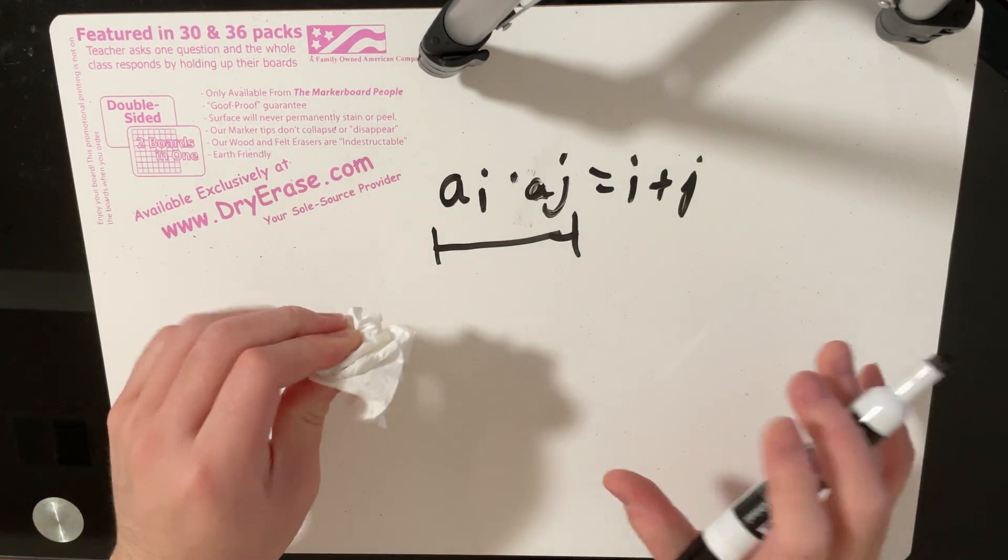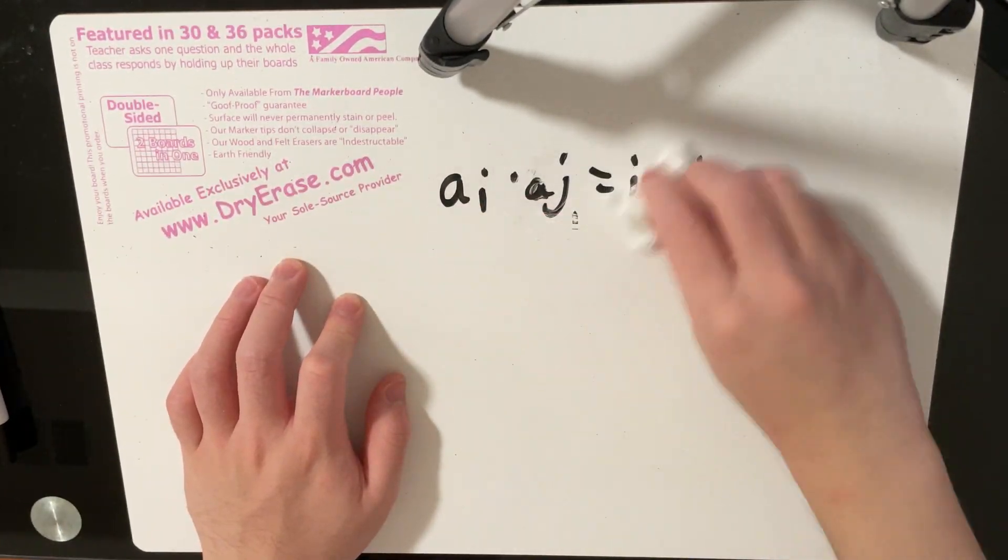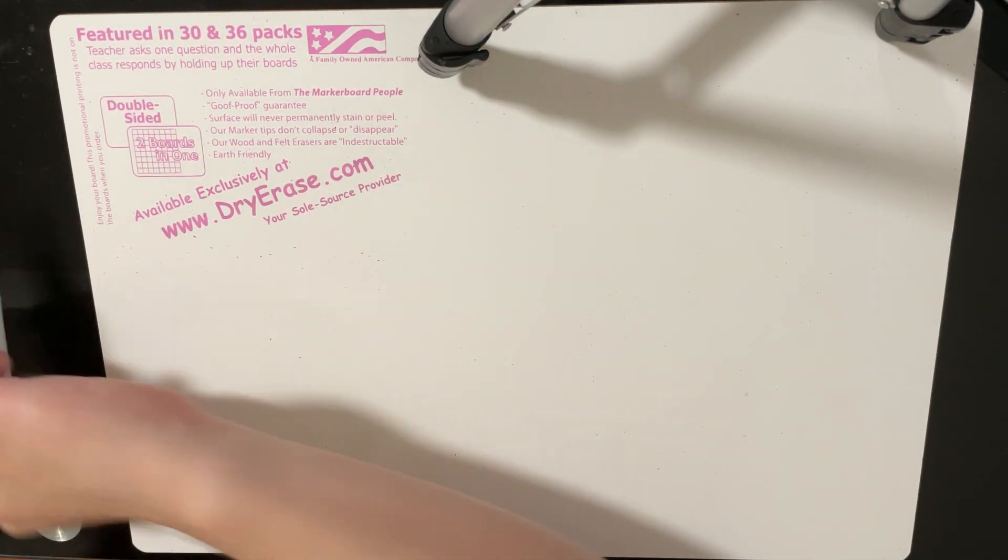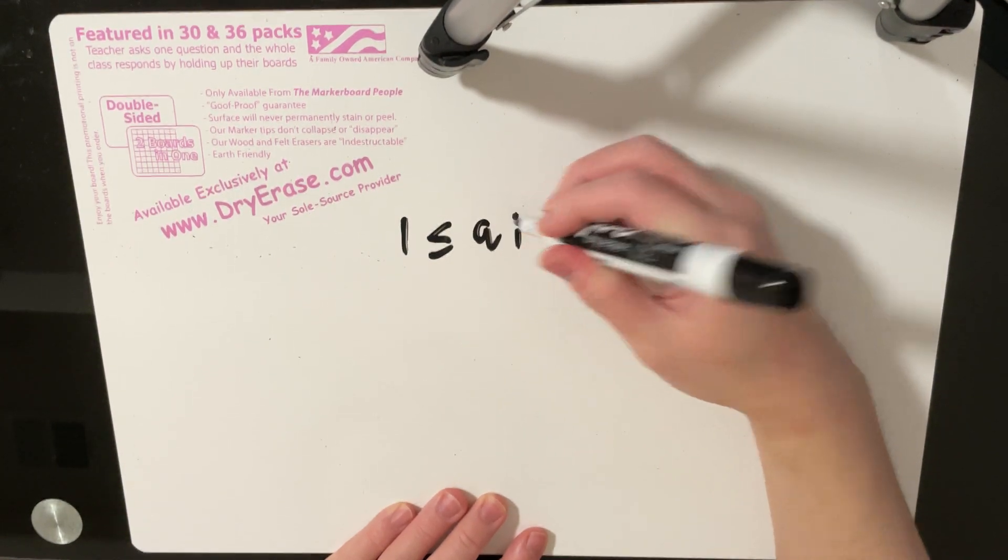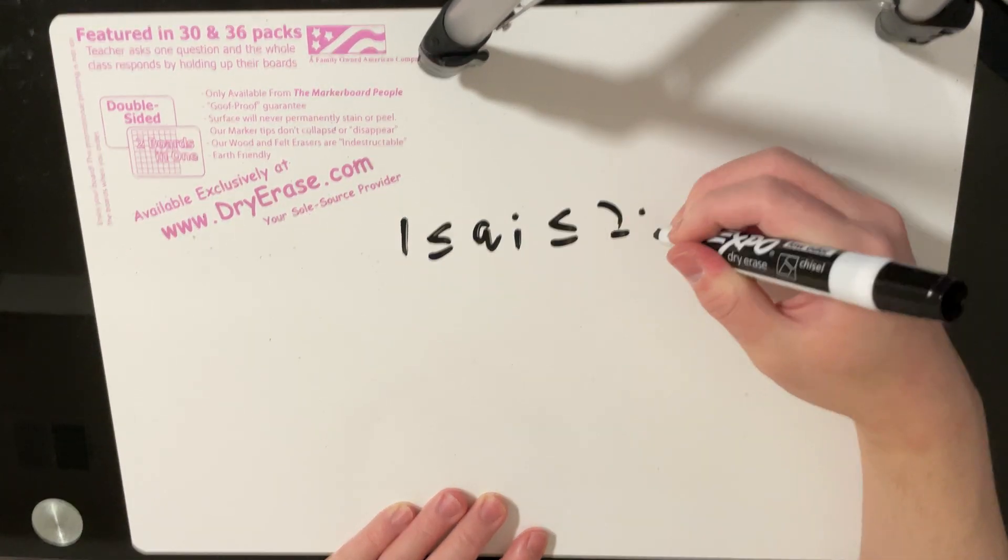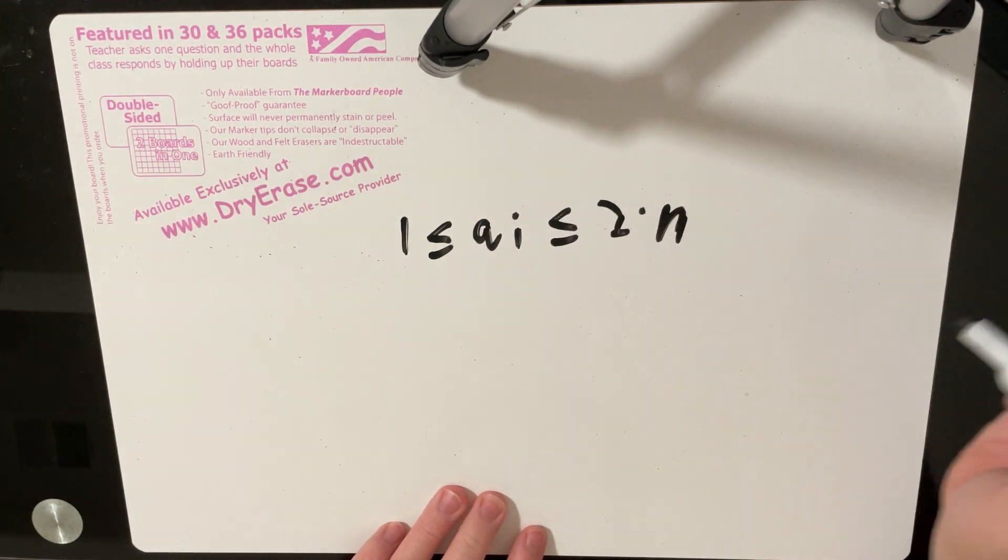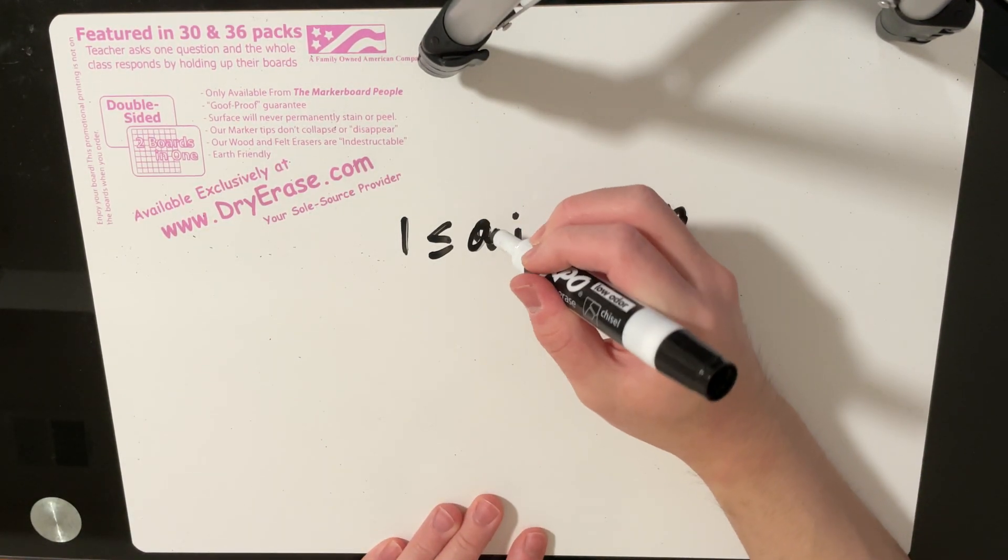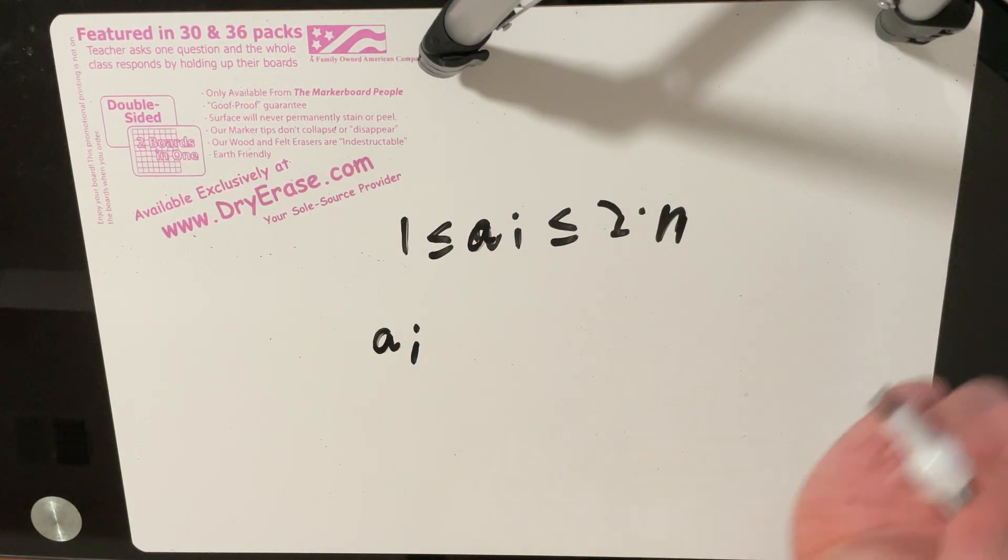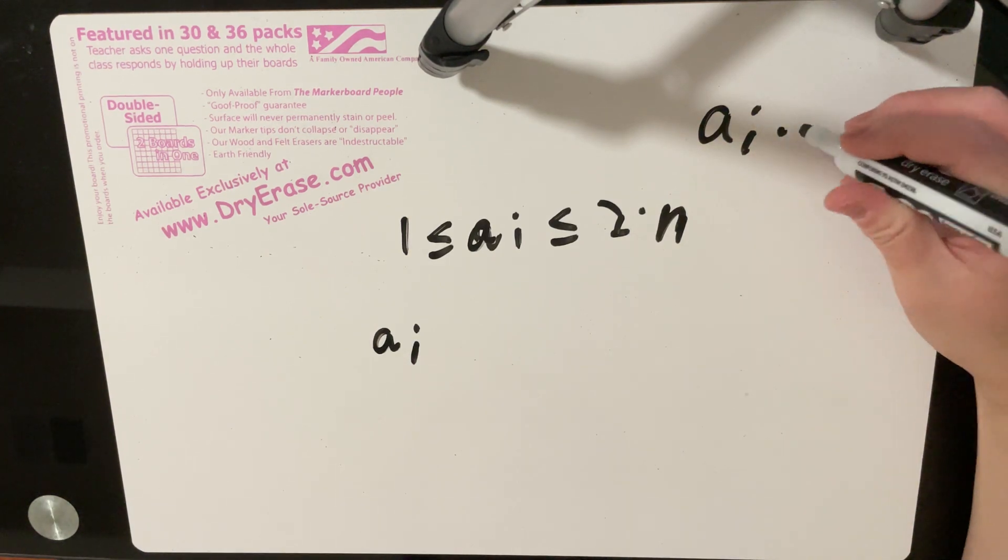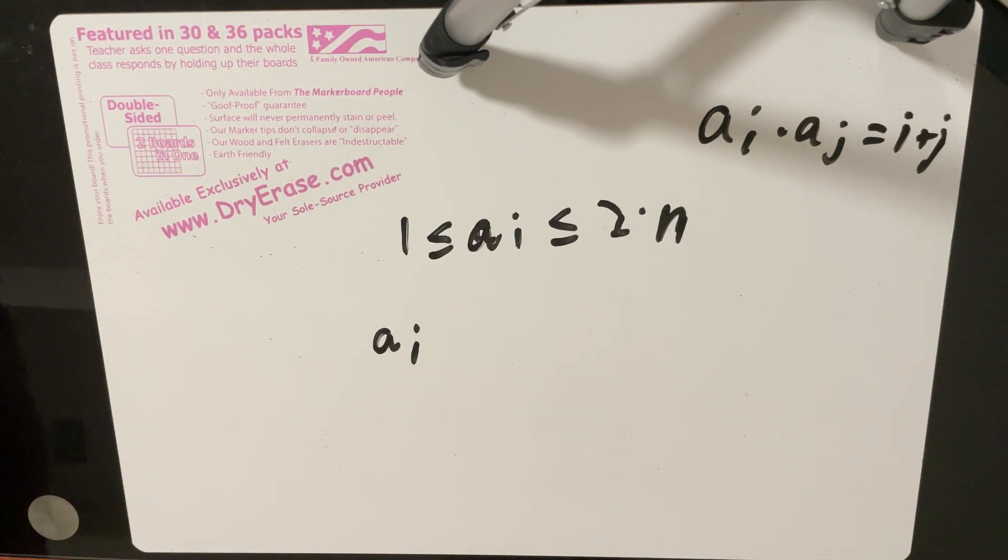So what we can do is we can iterate over the smaller value of ai, or I guess iterate over one of these terms. So let's say we wanted to iterate over ai. So for example, we wanted to check all values such that 1 is less than or equal to ai less than or equal to 2 times n. And we wanted to count how many values of j exist such that it can form a valid pair like this.